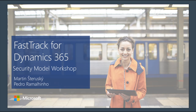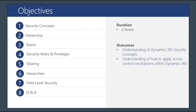Thank you very much, Debbie. My name is Martin Starusky, and I'm from the EMEA FastTrack team. Together with my colleague Pedro Ramalino, who is from the same team, we will do this workshop for you. Our agenda for today: I will tell you something about security concepts, ownership, teams, and security roles and privileges, and Pedro will tell you something about sharing, hierarchies, and field level security. The outcomes from this meeting should be understanding of security concepts available in Dynamics 365 and how to apply all these security options for your system.